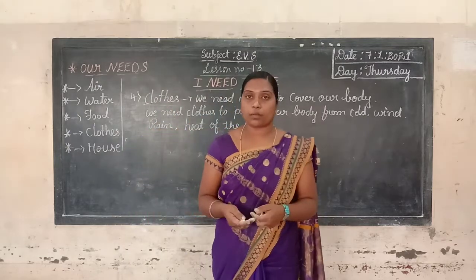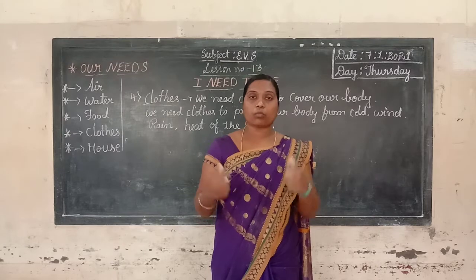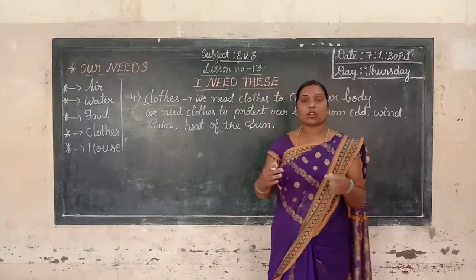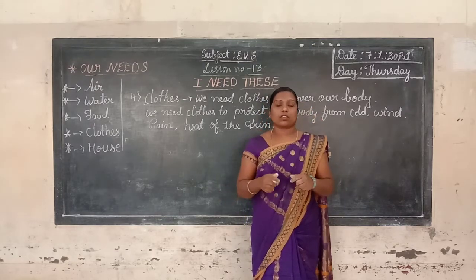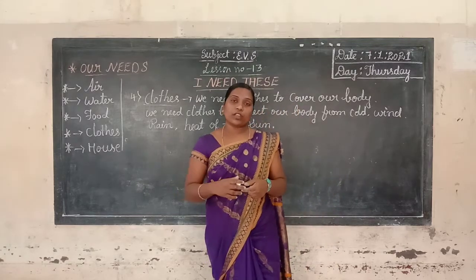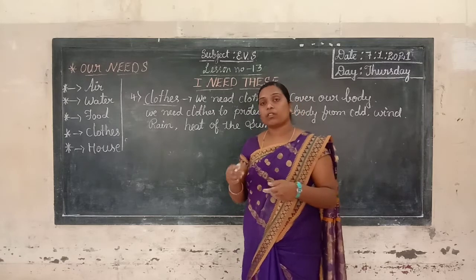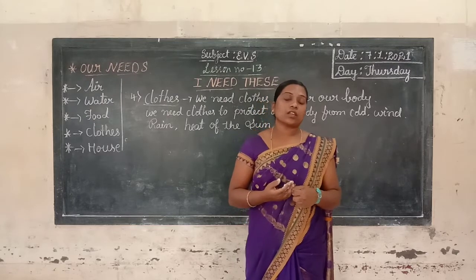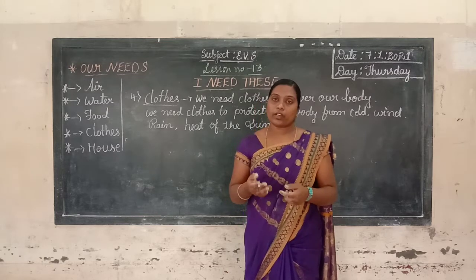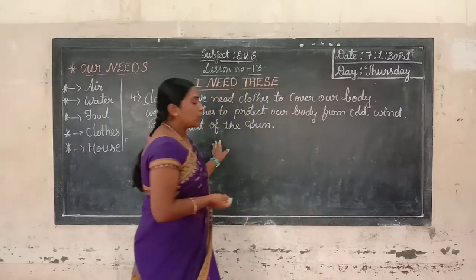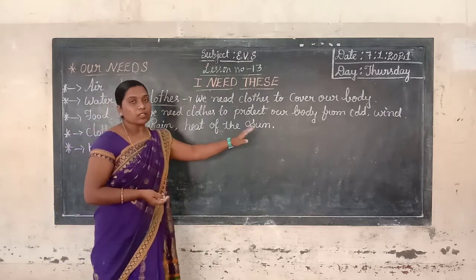We also need clothes to protect our body from animal bites and insects. We wear various clothes depending on the seasons. In summer we wear cotton clothes because it is very hot. In winter or rainy days we feel very cold, so we wear woolen clothes. Clothes are very important and essential for all.